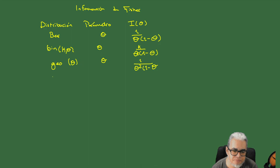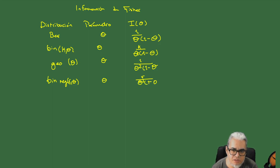La binomial negativa con parámetros r y theta: la información es r sobre theta cuadrada por 1 menos theta. La Poisson con parámetro theta positivo: la información es 1 sobre theta. La exponencial con parámetro theta: es 1 sobre theta cuadrada.